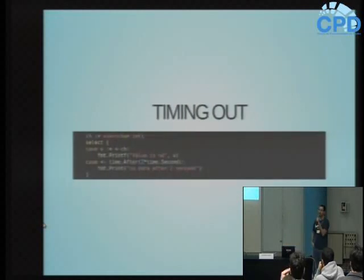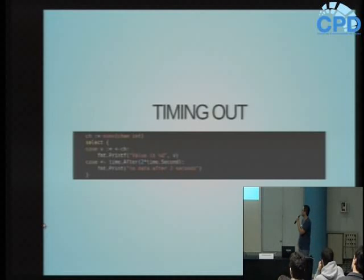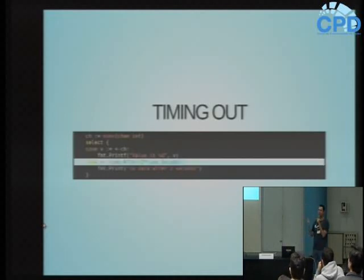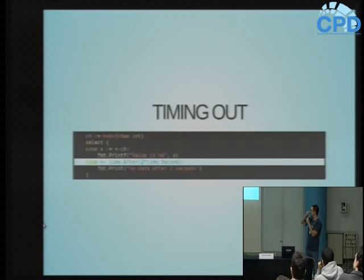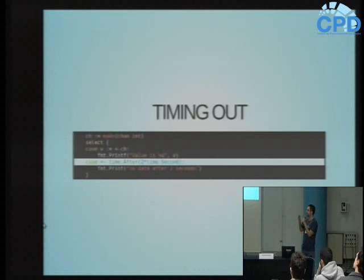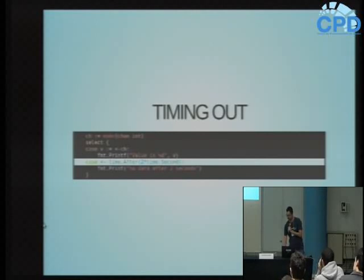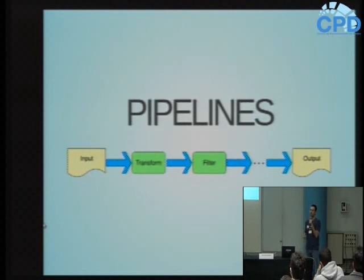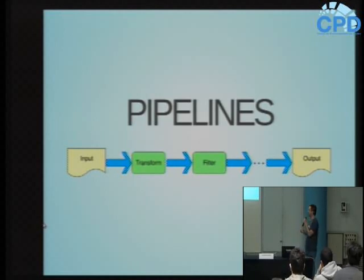Posso também fazer um timeout: se demorar muito para chegar uma informação, não quero ficar bloqueado eternamente. Uso a função time.After passando um período de tempo - ela retorna um channel que vai receber um valor depois daquele período. Se o meu channel receber um valor antes de dois segundos, entro no case de cima; se passarem dois segundos sem nada, caio no case de baixo e dou timeout, evitando ficar bloqueado. Isso é importante quando se espera resposta de um servidor e não se quer esperar indefinidamente.